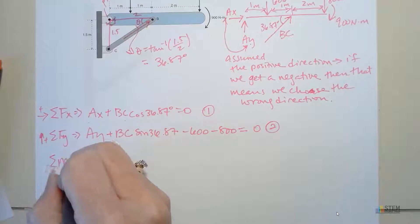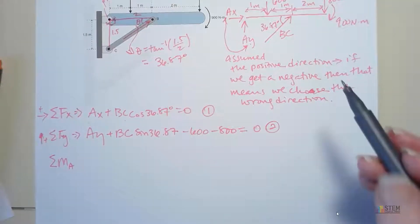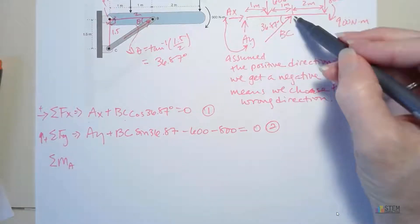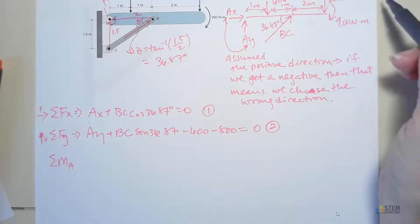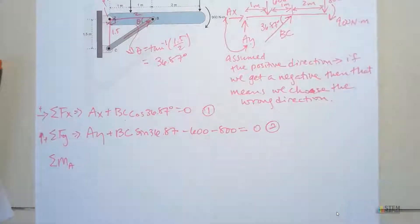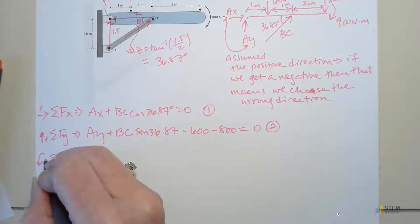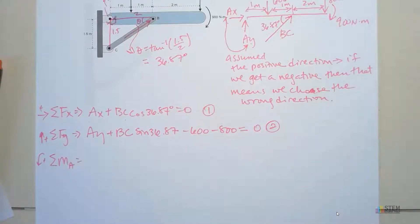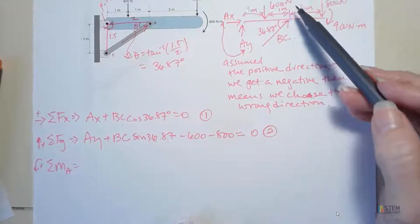We need a moment equation. And I am going to take the moment about point A. You can pick point B also, be about the same. But point A gets rid of three forces. Gets rid of AX, AY, and the X component of BC. So you don't have to find three of those moments. So that's why I picked that point.